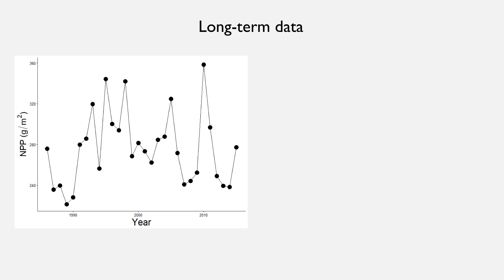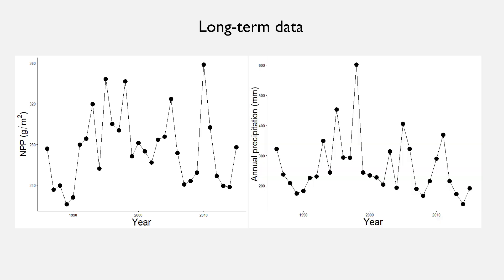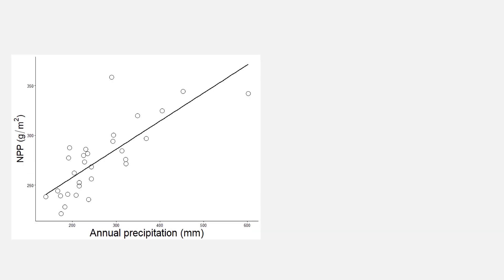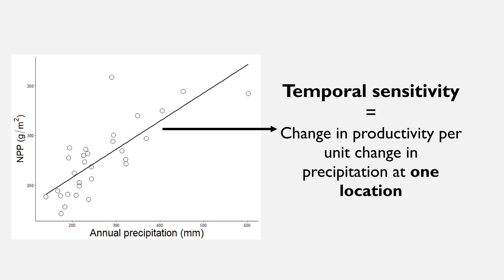On the y-axis is net primary productivity and on the x-axis is data from 1985 to 2016 — a 30-year time series at one location. What we've done is pair that productivity data with weather data, typically annual precipitation. When we integrate those two datasets, we can get an understanding of how sensitive net primary productivity is to year-to-year variation in precipitation. From the slope of that line — the rise over run — we can get an understanding of temporal sensitivity, which is the sensitivity of primary productivity to fluctuations in precipitation at one location.